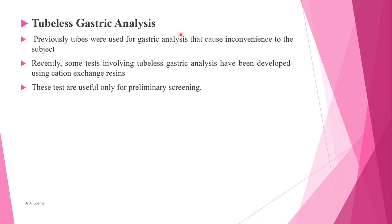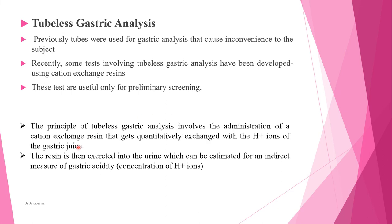Tubeless gastric analysis has also been developed, as Ryle's tubes cause inconvenience to the subject. These tests use cationic exchange resins and are useful only for preliminary screening. The principle involves administration of cation exchange resins, which get quantitatively exchanged with protons of the gastric juice. The resins are then excreted into the urine, where they can be estimated for an indirect measurement of gastric acidity — that is, the concentration of H+ ions can be estimated in the urine to determine gastric acid production.